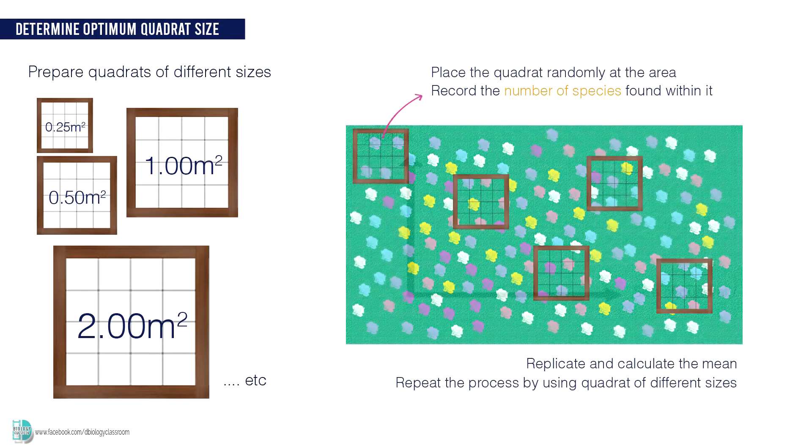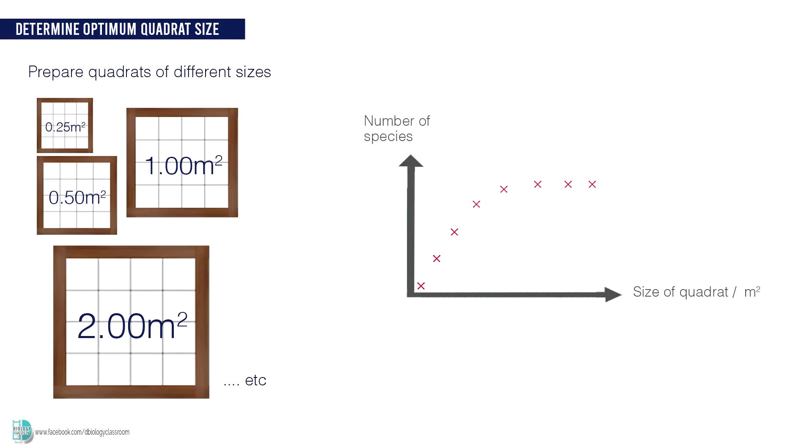Then plot a graph of number of species against quadrat size. The optimum quadrat size is when the graph levels off. This is the point where most available species are sampled, while increasing the size of the quadrat does not benefit the sampling process.